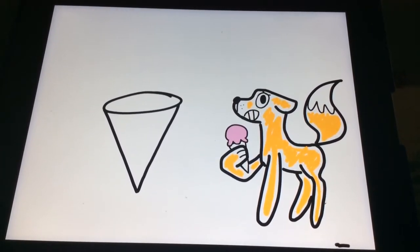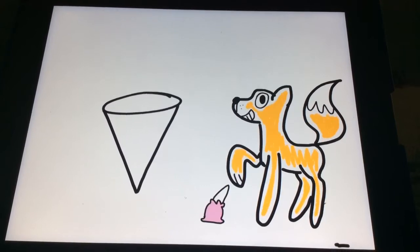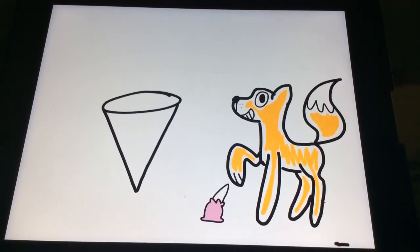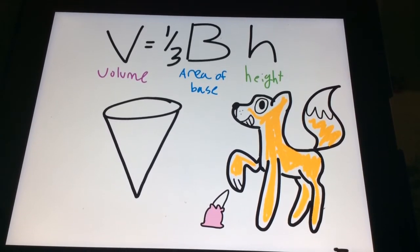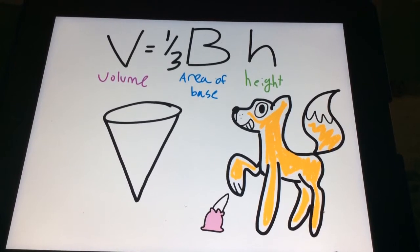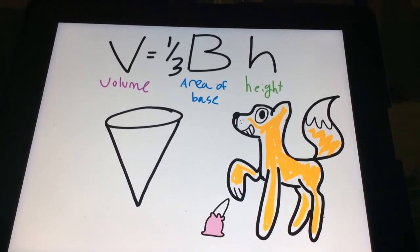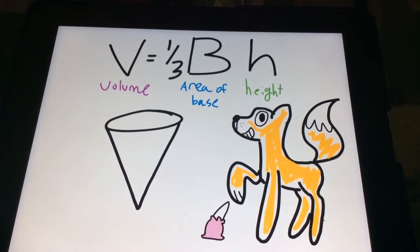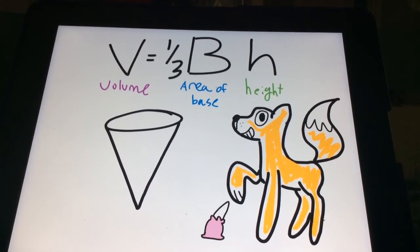Now how do we find the volume of this kind of shape? Really, the answer is quite simple. There's a simple mathematical equation for this cone: V, volume, equals one-third the area of the base times the height.